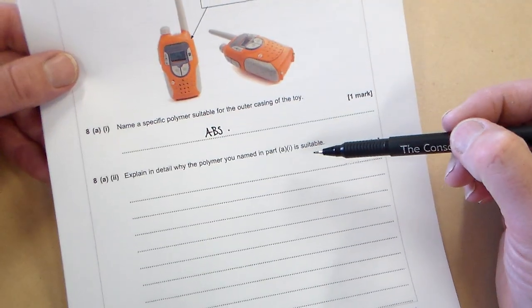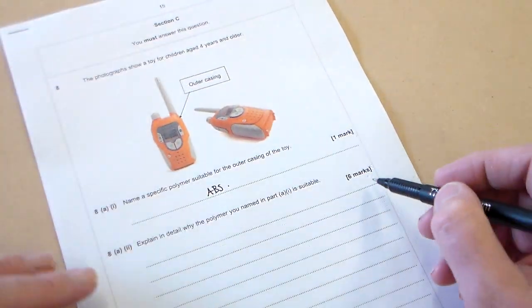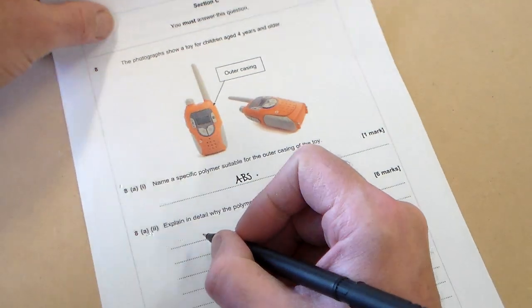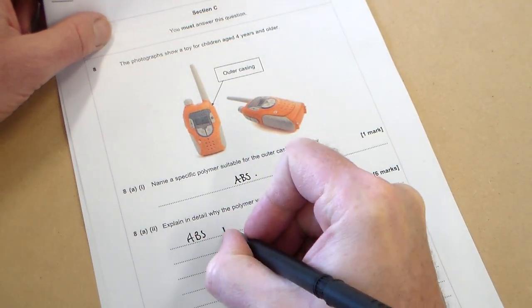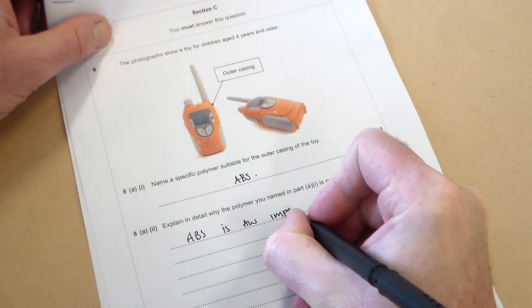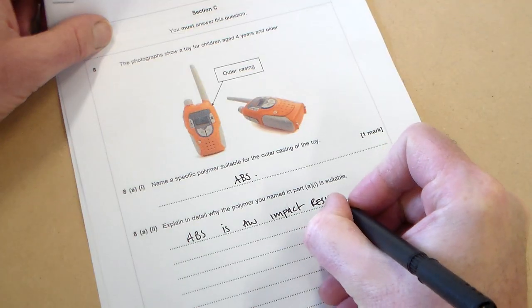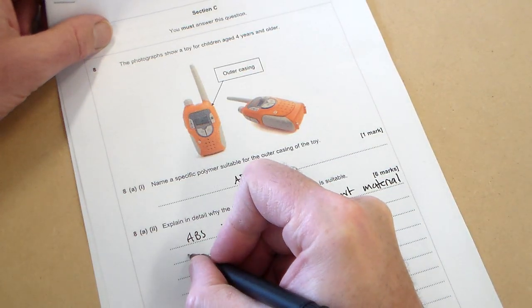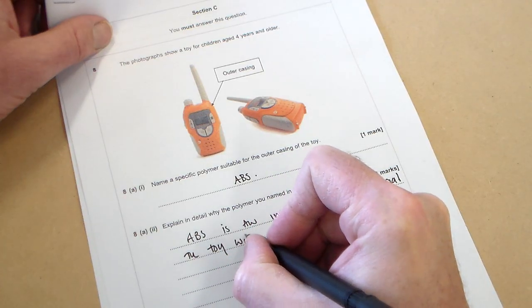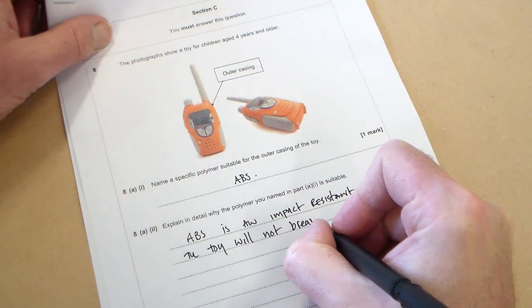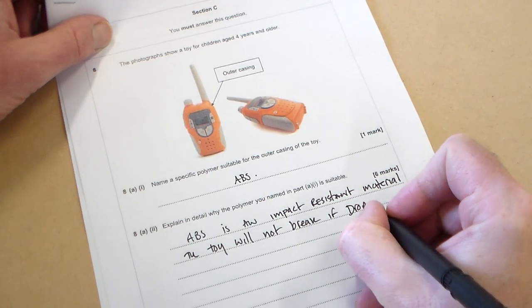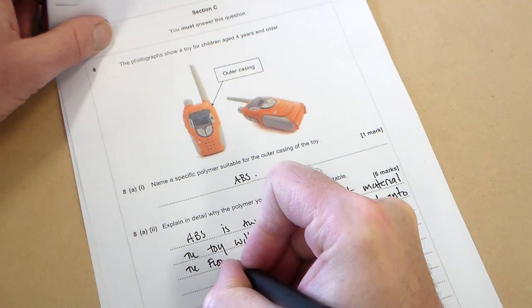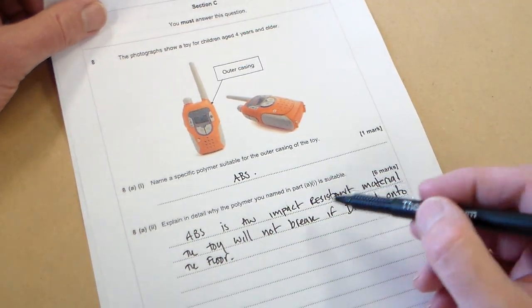Then explain in detail why the polymer you named in part A(i) is suitable. So that was one mark. This is six marks. So what can we say about ABS? Well we can say that ABS is an impact resistant material. The toy will not break if dropped onto the floor.